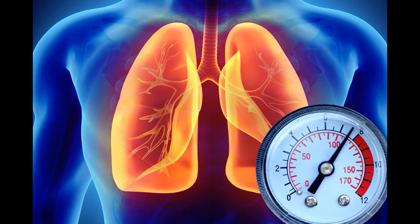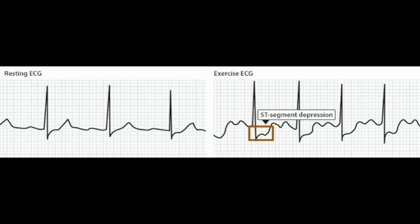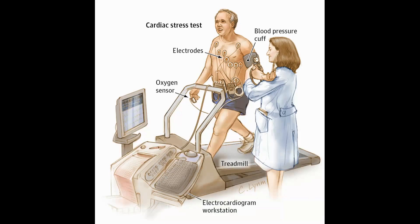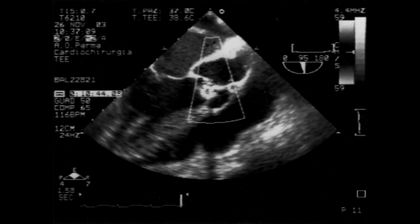Investigations: Resting ECG is normal between attacks, but during attacks there is ST depression and T-wave inversion. Exercise ECG is taken in addition to resting ECG to confirm the diagnosis, where the patient is asked to walk on a treadmill and the ECG is recorded continuously. An ST segment depression of greater than 1 mm suggests myocardial ischemia or angina.